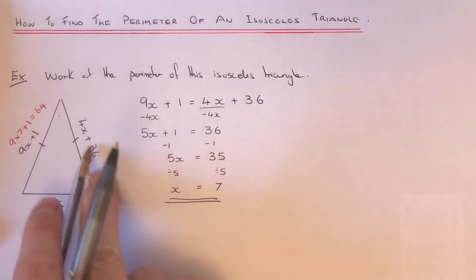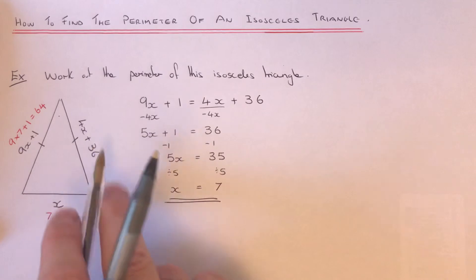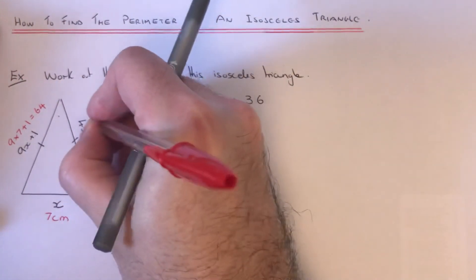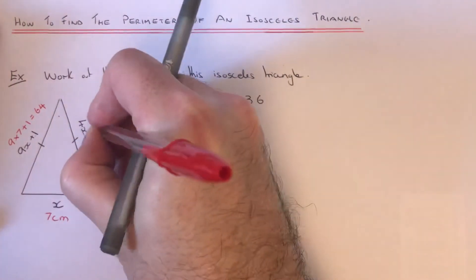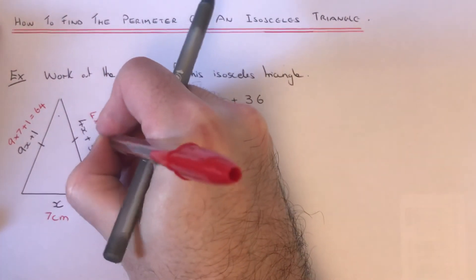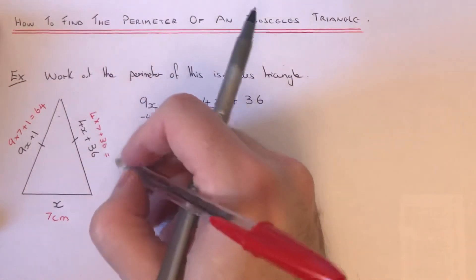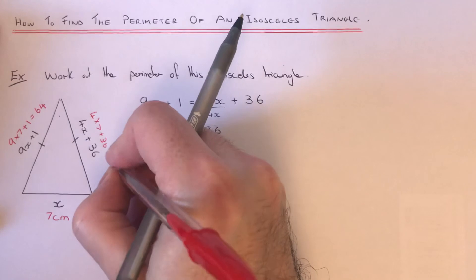And this one should also be 64 because remember these two are the same. But let's just check that. So on this one we've got to do 4 times 7 plus 36. So 4 times 7 is 28 plus 36. Yep, that is 64.